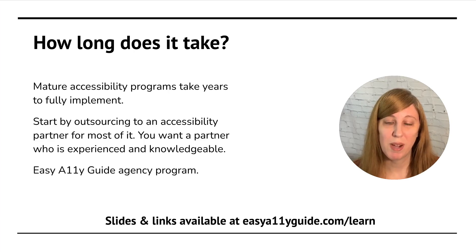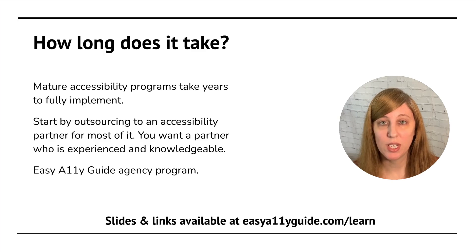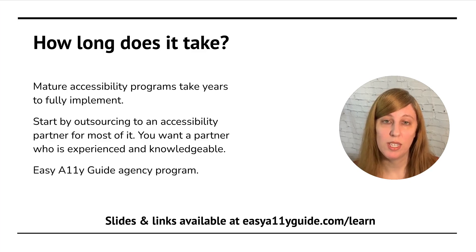You're going to start by outsourcing a lot of your accessibility work to a partner. You'll want to have a partner who's experienced and knowledgeable. The Easy Alley Guide has an agency program to help agencies get started, get recurring revenue from affiliate programs, and get recurring revenue by outsourcing the work to the Easy Alley Guide to get it fulfilled.